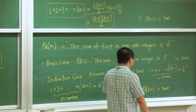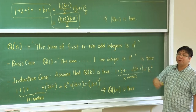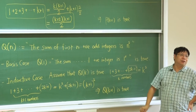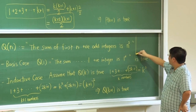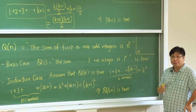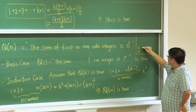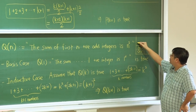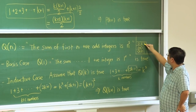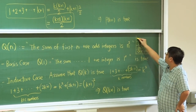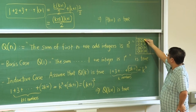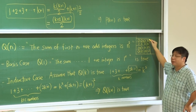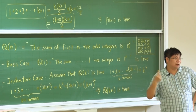Of course, there is also an easier proof to prove the same proposition — we can prove it by a graphical way. 1 is 1; 2 squared equals 1 plus 3; 3 squared equals 1 plus 3 plus 5. Using this visual, you can see that if you add the first k odd integers, you will get k squared. But here we have had practice with the form of mathematical induction.